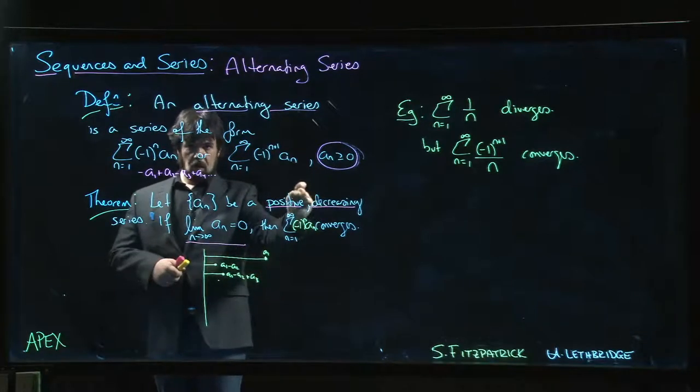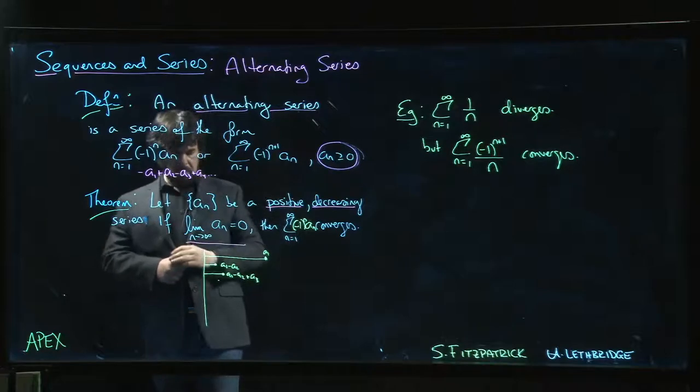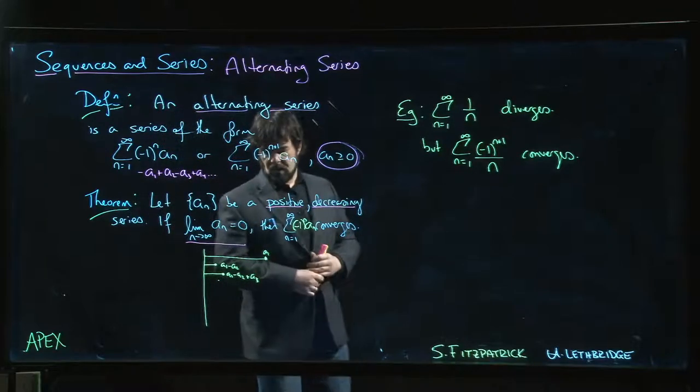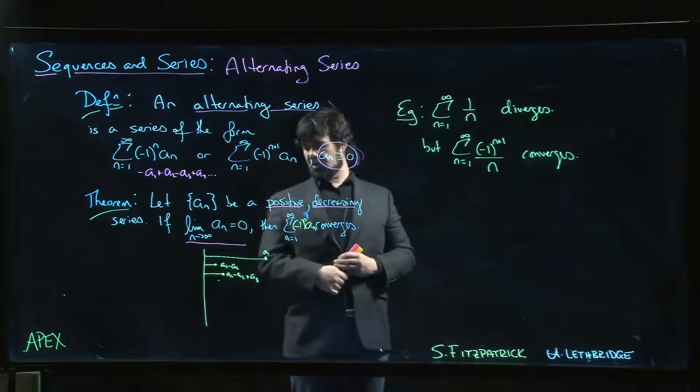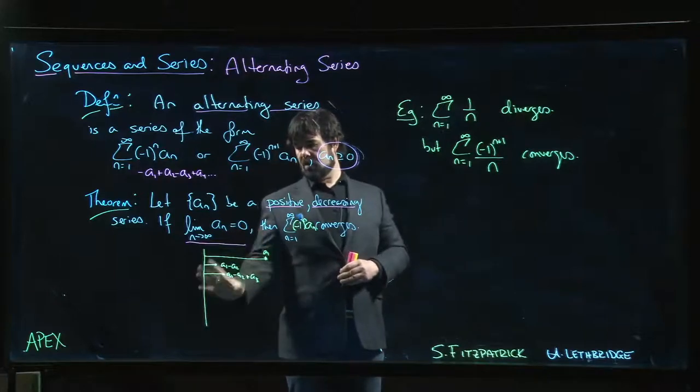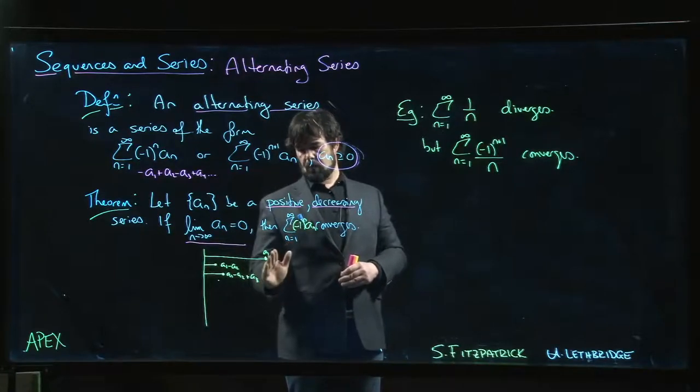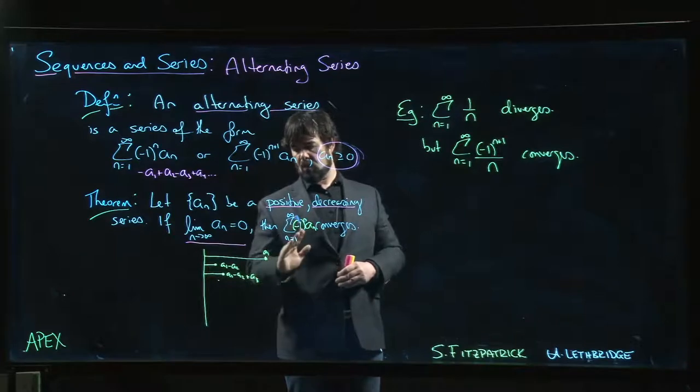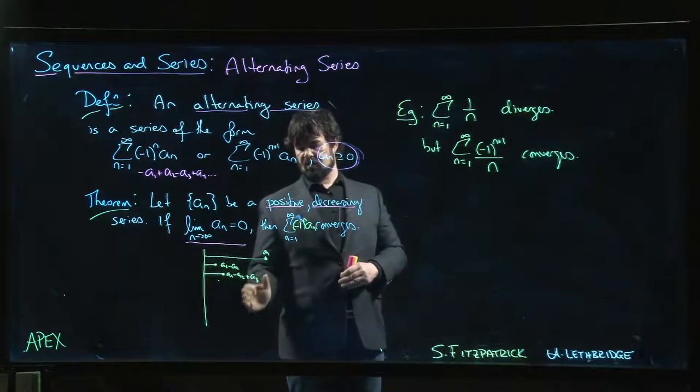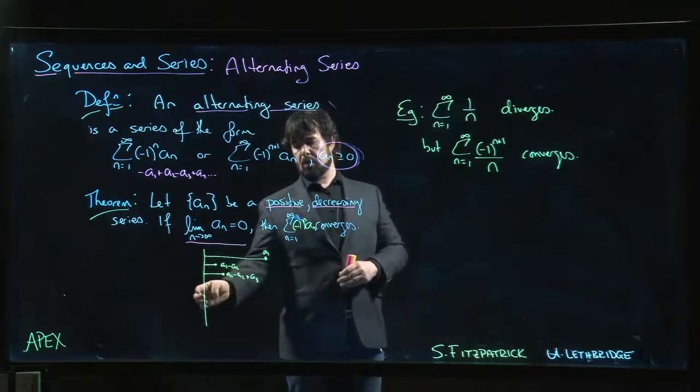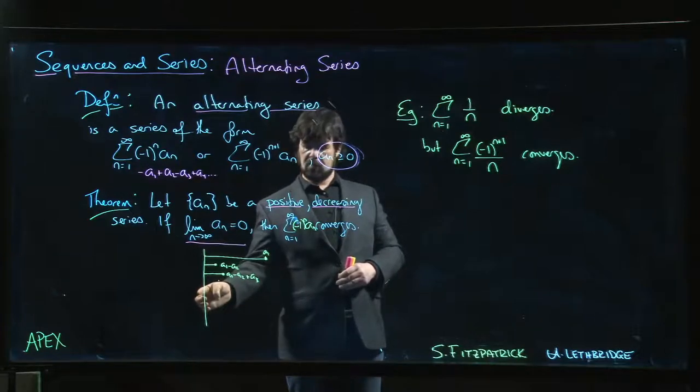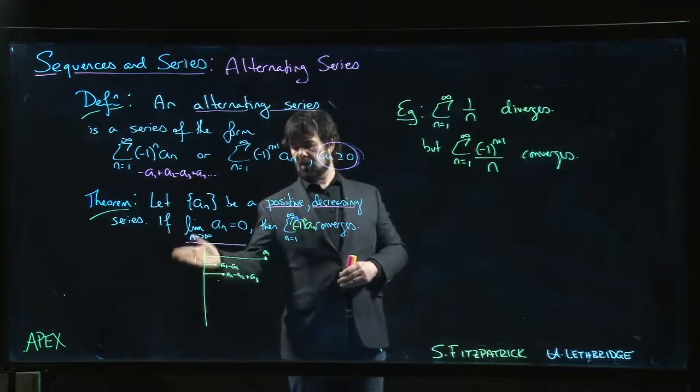So if you look at the partial sums when n is odd in this scenario, the partial sums when n is odd start big but they get smaller. So you have a decreasing sequence that's bounded below by zero.